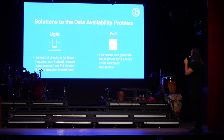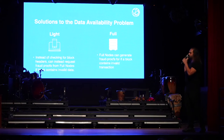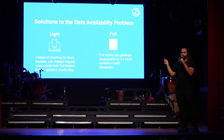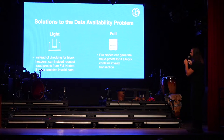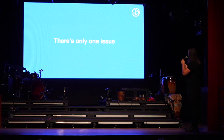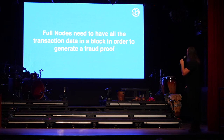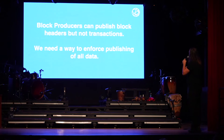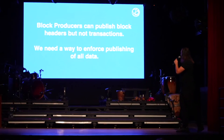What are the solutions to the data availability problem? One approach we take with light nodes at Celestia - instead of checking block headers, we're requesting fraud proofs from full nodes if a block contains invalid data. A full node can generate fraud proofs for a block to check if it contains invalid transactions. The issue with this design is that full nodes need to have all the transaction data in a block in order to generate fraud proofs - and that's part of the data availability problem. So we need a way to enforce publishing of all data.